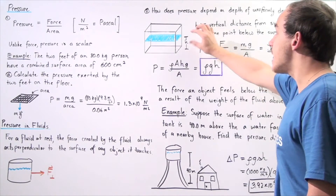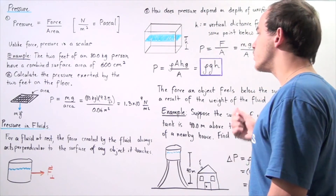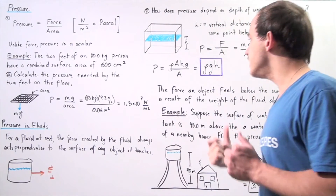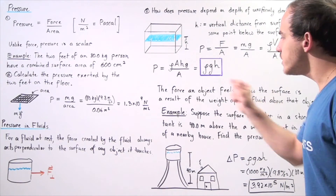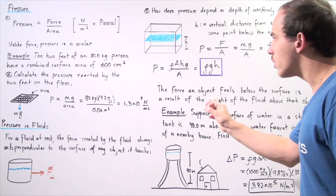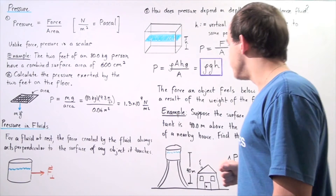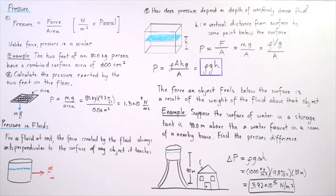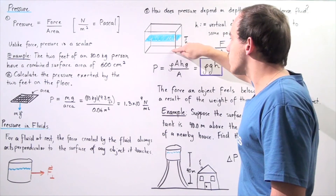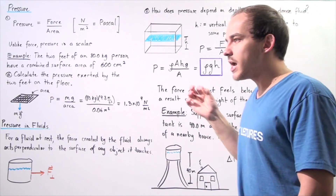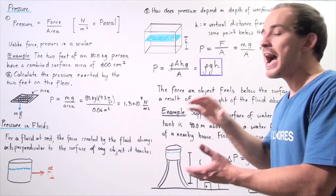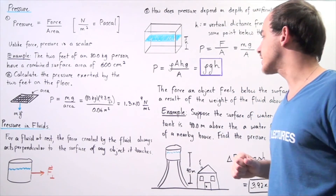This is our relationship between pressure and depth. We see that as the depth h increases, the pressure also increases. And as the density increases — as the fluid becomes more dense — the pressure also increases. Importantly, the force an object feels below the surface of the fluid is a direct result of the weight of the fluid above that object: how much fluid, and how much weight of that fluid, is found above that object.